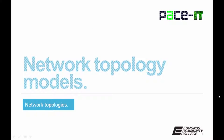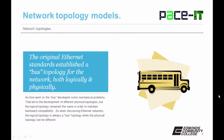Now let's move on to some common network topology models. The first is the bus. The original Ethernet standard established a bus topology both logically and physically. In a bus topology, the signal traveled along a predetermined path from end to end — from one direction to the other and back. As time went on, the bus developed some mechanical problems, leading to the development of different physical topologies, but the logical topology remained the same to maintain backward compatibility.